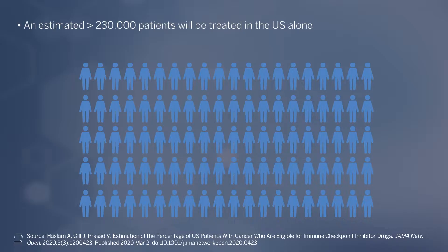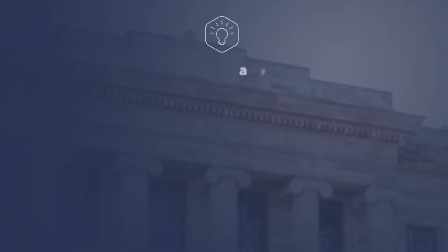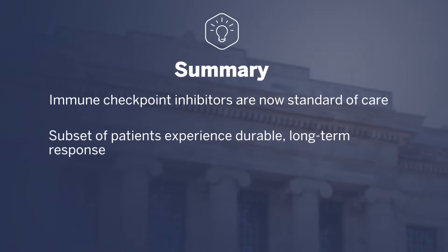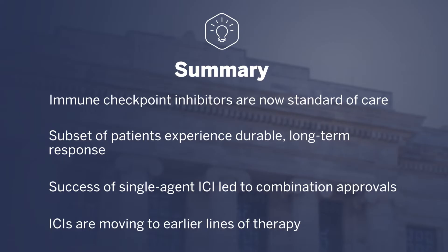About 10 to 30% have serious immune-related adverse events — that is anywhere from 23,000 to 69,000 individuals. Please see our next video for immune-related adverse events. But as a summary: immune checkpoint inhibitors are now standard of care, a subset of patients experience durable long-term responses, and the success of single-agent checkpoint has led to combination approvals, moving those therapies to earlier lines of therapy called the adjuvant space. Thank you so much for watching. I hope you found this video educational.